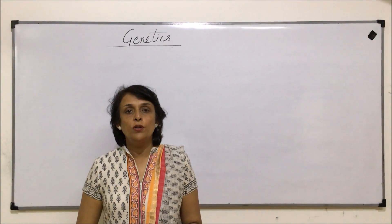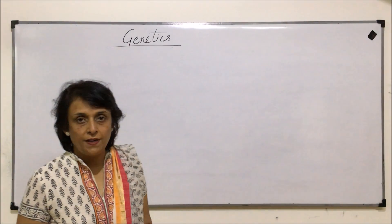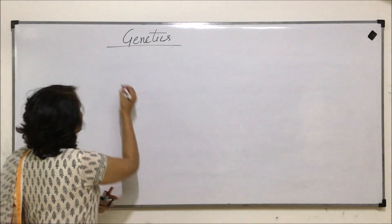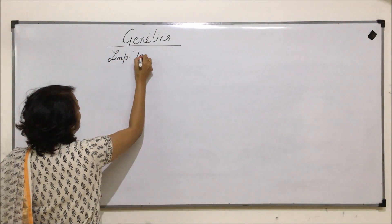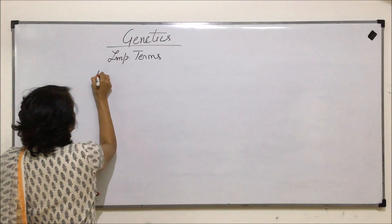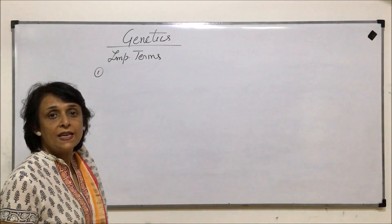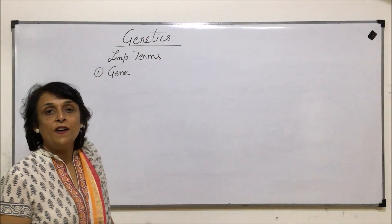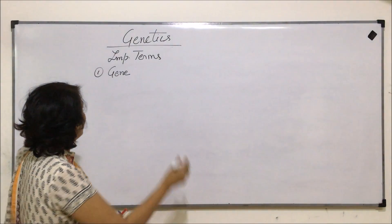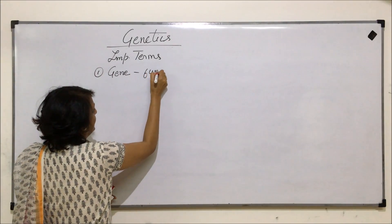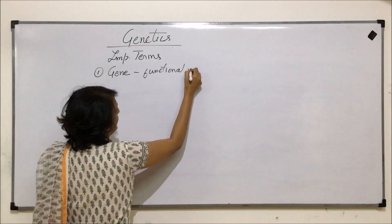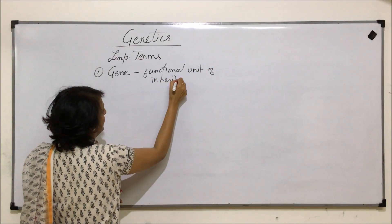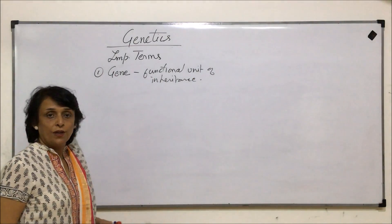Let us discuss the important terms that we use while we discuss all the things or principles of genetics. First is gene. Gene is the functional unit of inheritance.